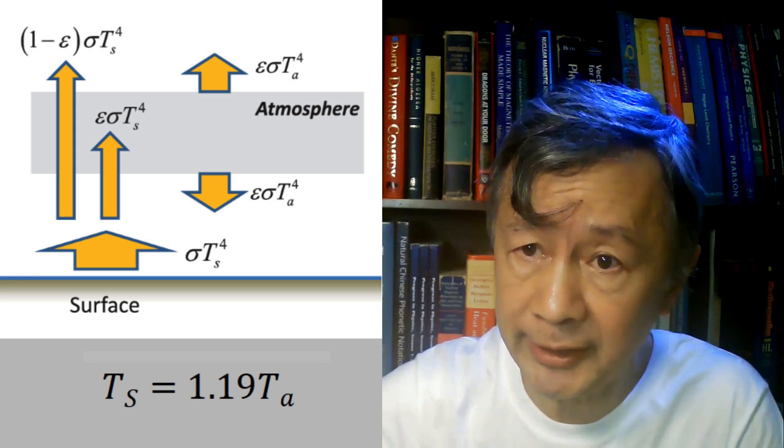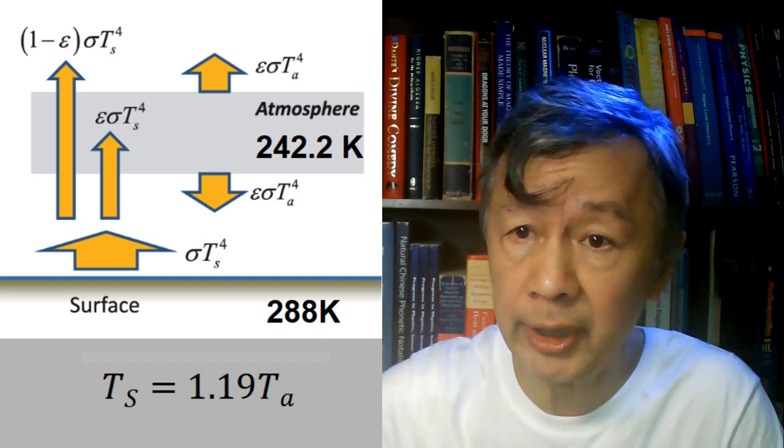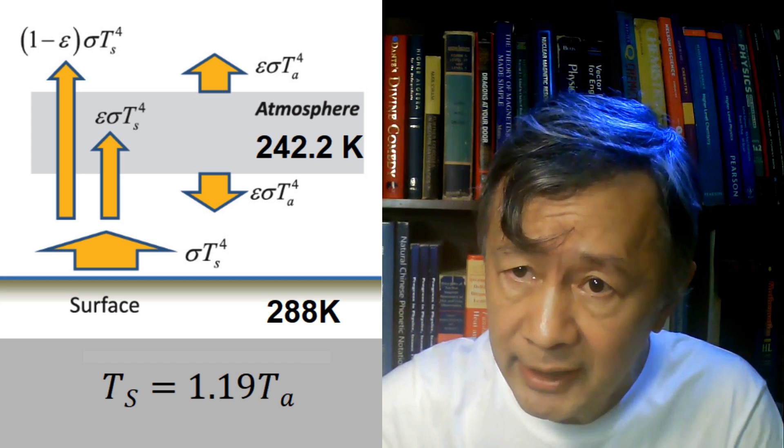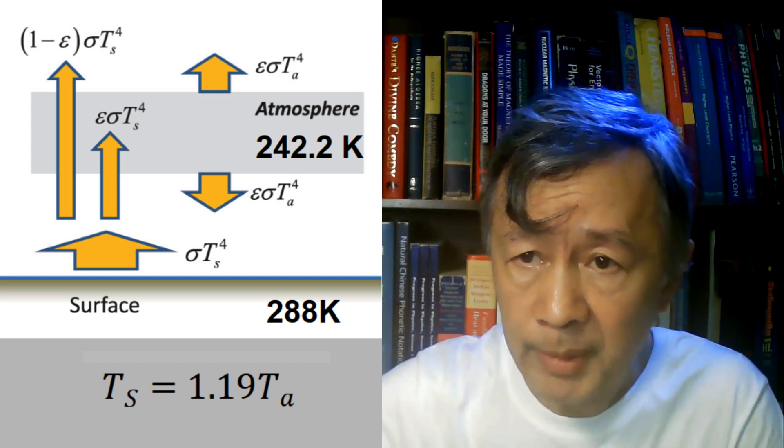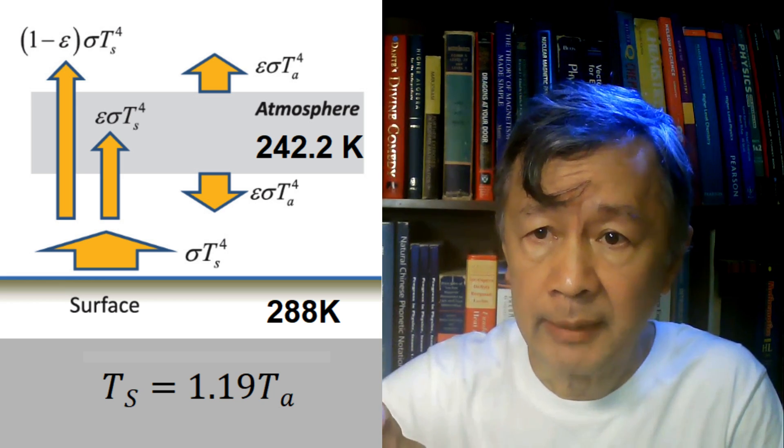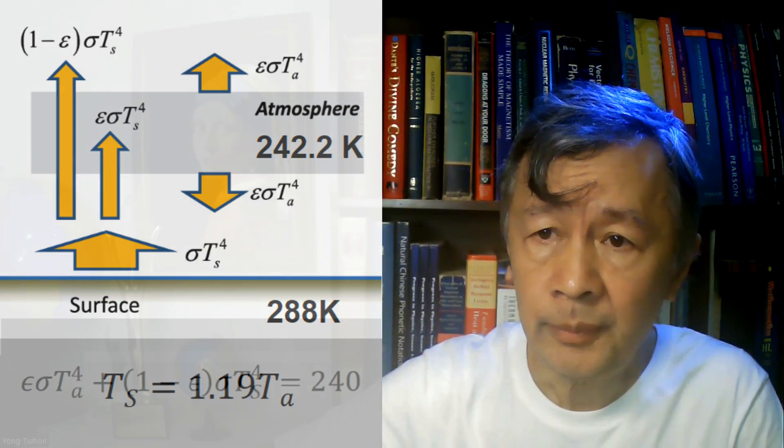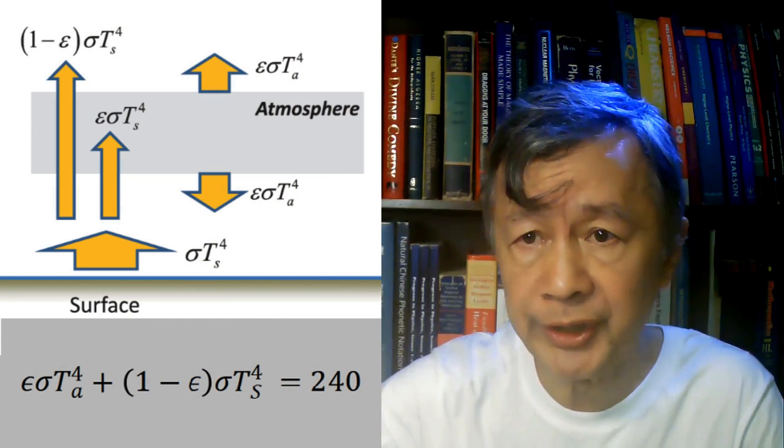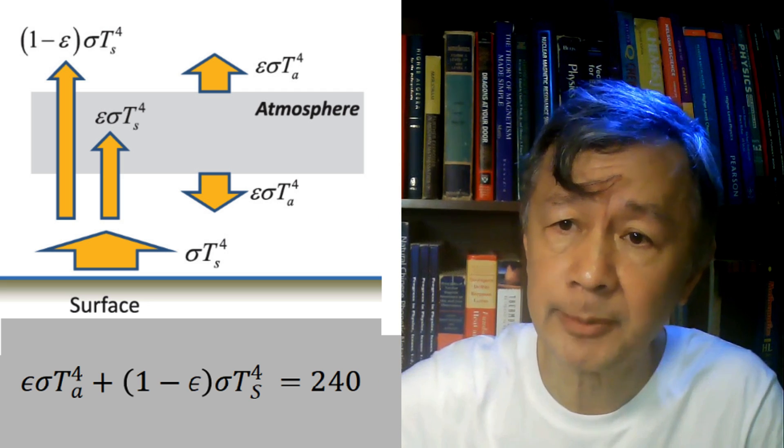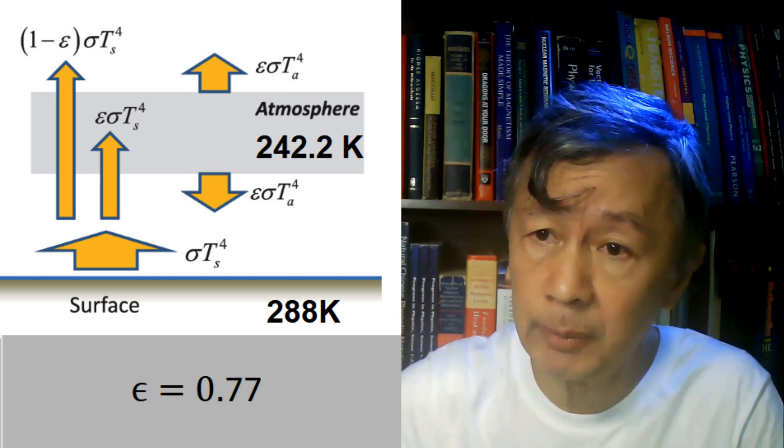Given the surface temperature 288 Kelvin, the temperature of the atmosphere should be 242.2 Kelvin. What does that mean? Because the upward radiation is epsilon multiplied by sigma multiplied by T_a to the power of 4, and the transmitted surface radiation is given by (1 minus epsilon) multiplied by sigma multiplied by T_s to the power of 4, whose sum must equal to the outgoing radiation, 240 watt per meter square. That is a radiative balance condition at the top of the atmosphere. From this equation, one can obtain the emissivity epsilon equal to 0.77.